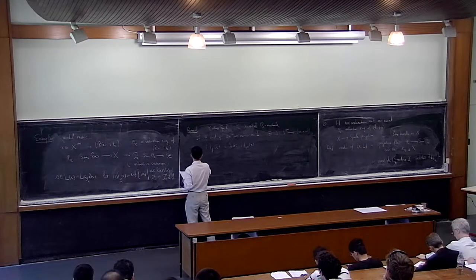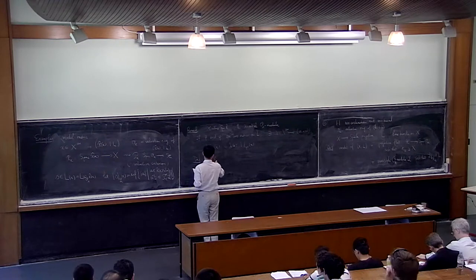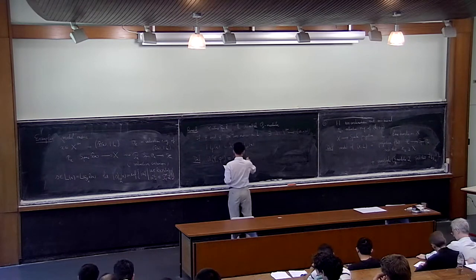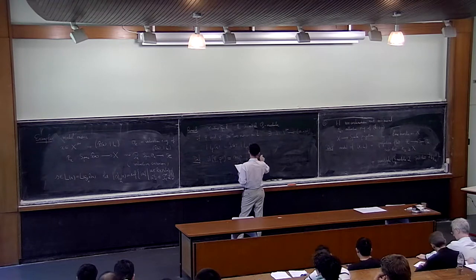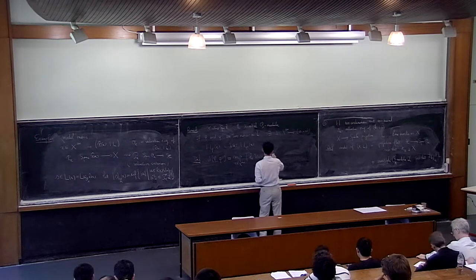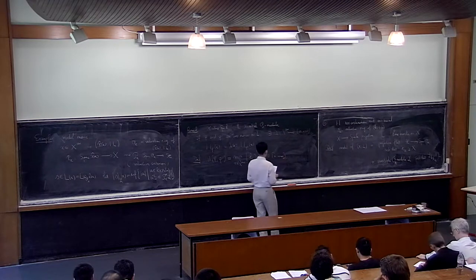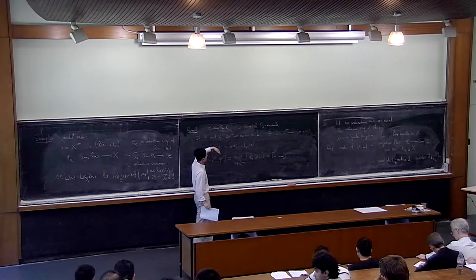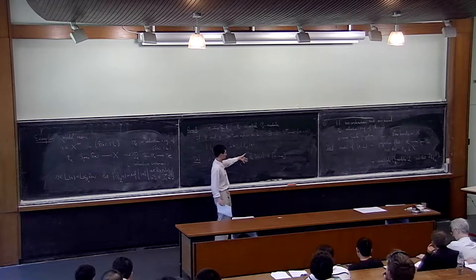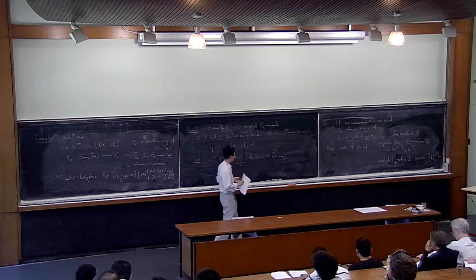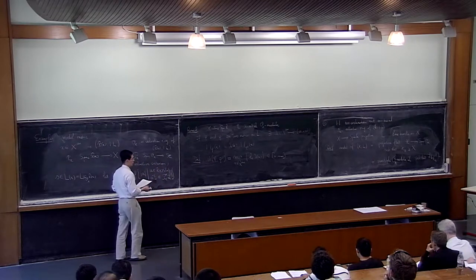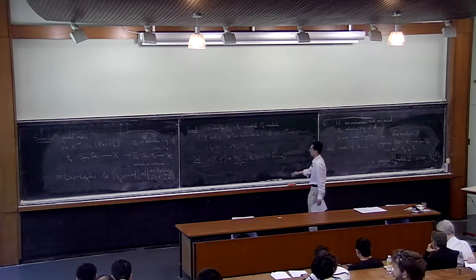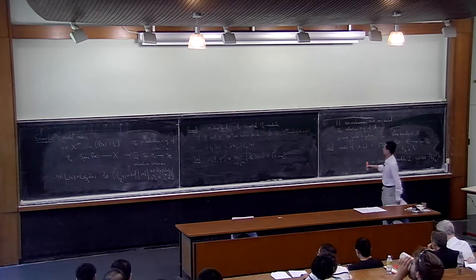On va définir la distance entre ces deux métriques φ et φ' comme le sup pour x dans X^an de |log λ(x)|. Ce nombre vit dans [0,+∞). Mais si les métriques sont continues et π est un morphisme propre, X^an est compact. Vous avez donc une fonction continue dont vous évaluez le sup sur un espace compact, et vous trouvez un nombre fini.